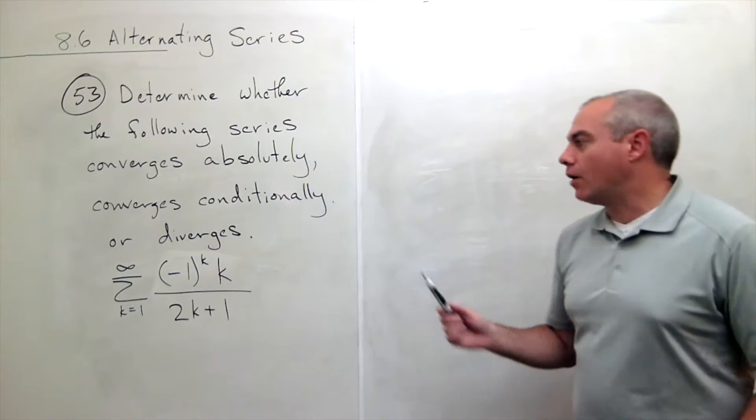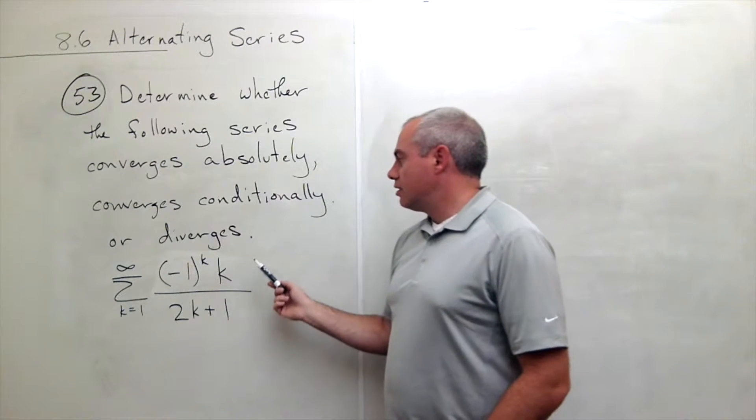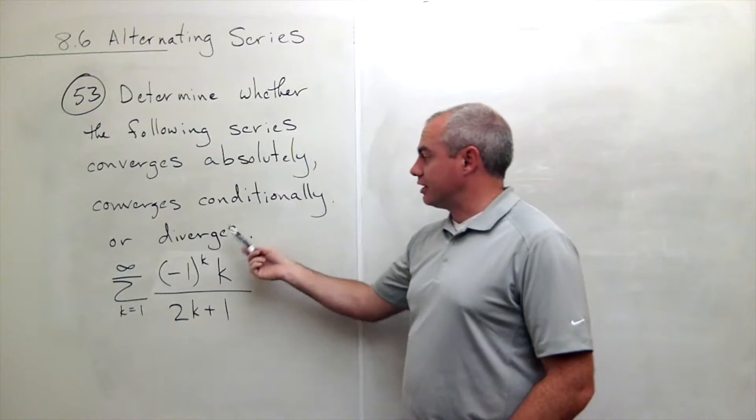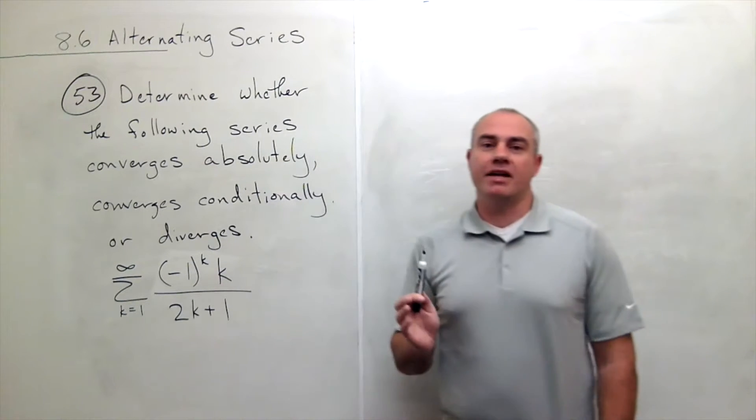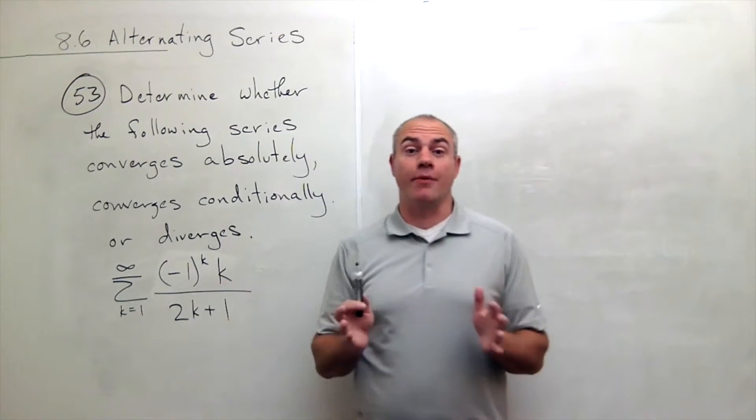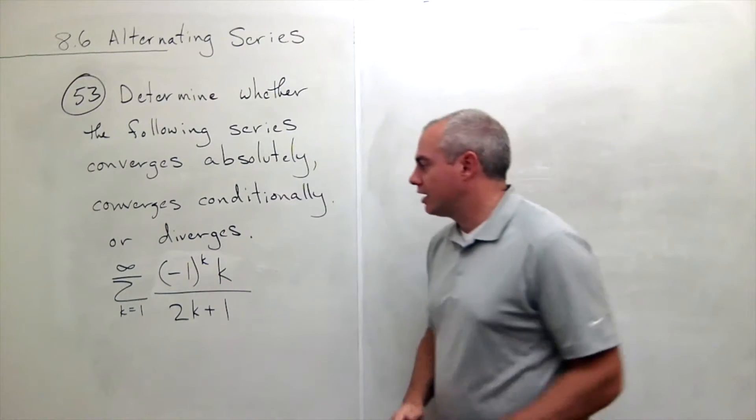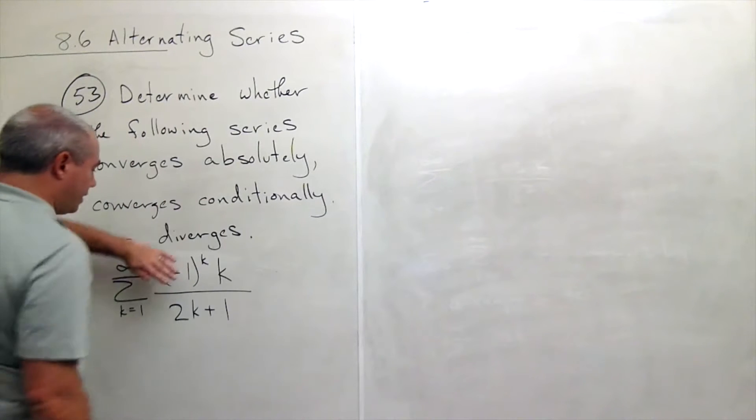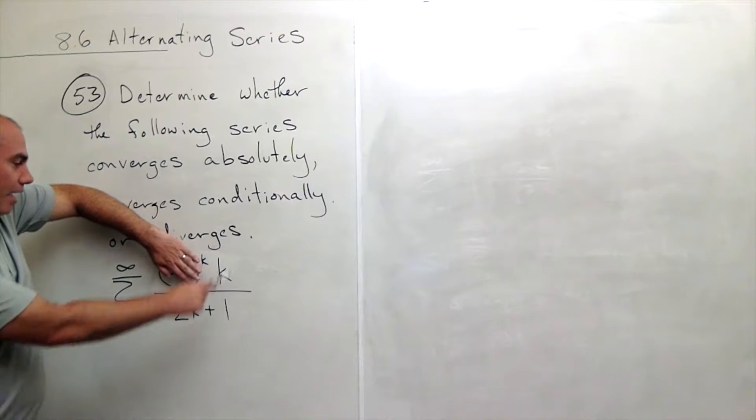So how are we going to determine whether this series converges absolutely, conditionally, or diverges? Well, it really depends on the problem. Typically what I would do on these problems is say, okay, does it converge absolutely? So I want to get rid of the negative 1 to the k piece and look at what do I think about this thing?